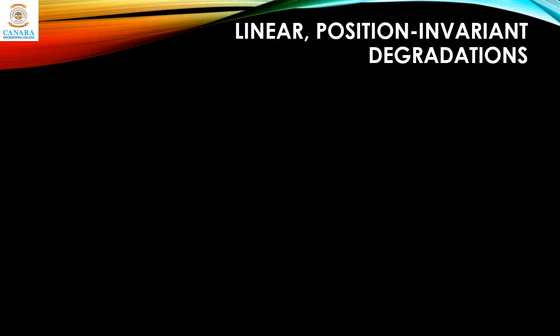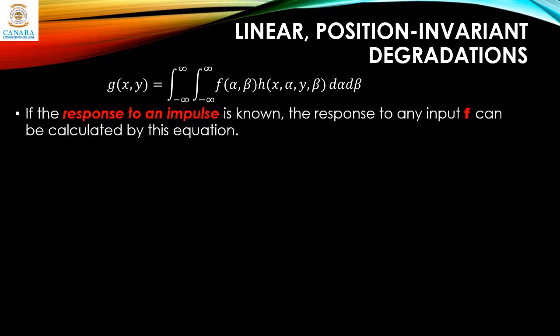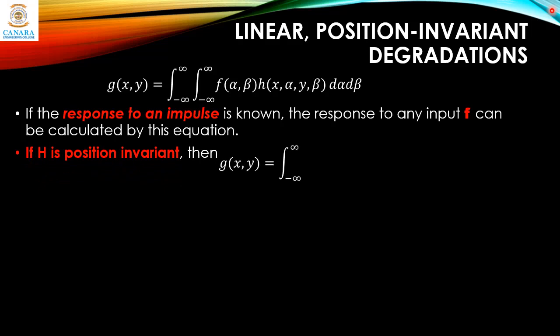We can further simplify g(x,y) as a double integral of f(α,β)·h(x,α,y,β) dα dβ. This equation is called the superposition integral of the first kind, also called the Fredholm integral of the first kind. It states that if the response of h to an impulse is known, then the response to any input f(α,β) can be calculated. If h is position invariant, g(x,y) = ∬ f(α,β)·h(x−α, y−β) dα dβ.